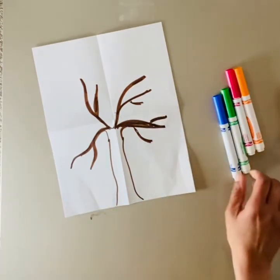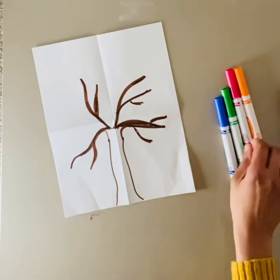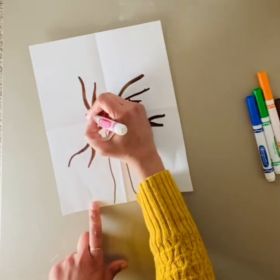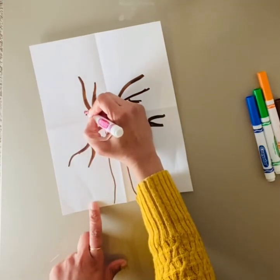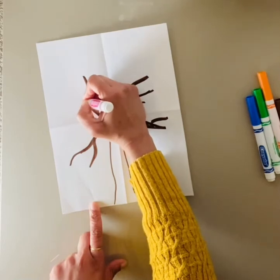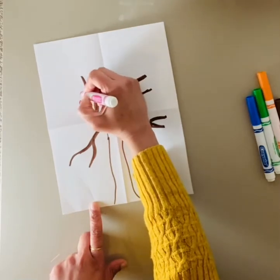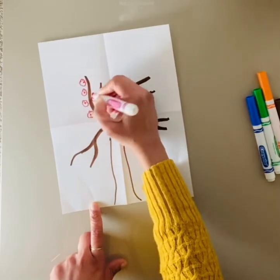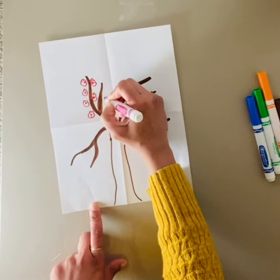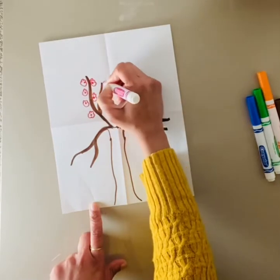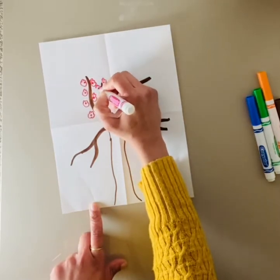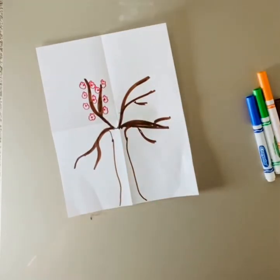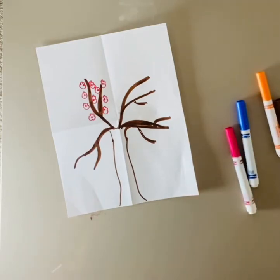Once you have that, we're gonna first start with spring. Spring is when the earth is warm and you see flowers, you see a few leaves after the cold dreary winters. You have spring to show life.